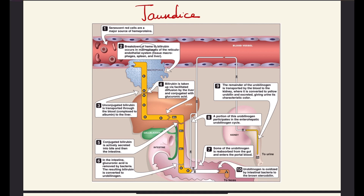In the liver, it undergoes the process referred to as conjugation, where it's conjugated with glucuronic acid. Once it is conjugated with glucuronic acid, it is secreted into the intestines — into the bowel. So it's actively secreted into the bile and then it goes into the intestines.